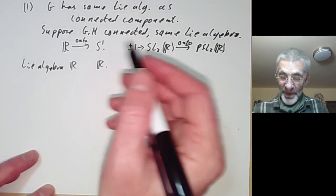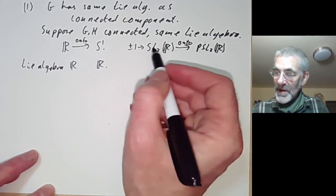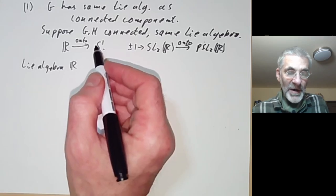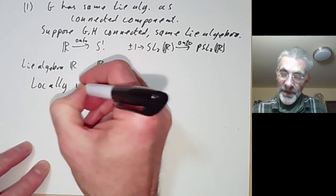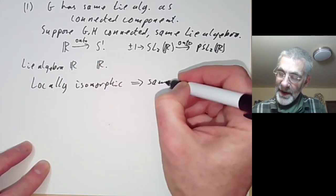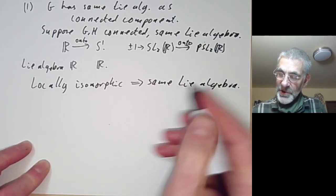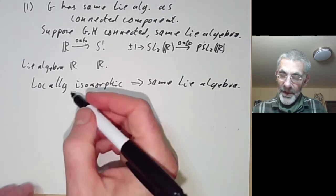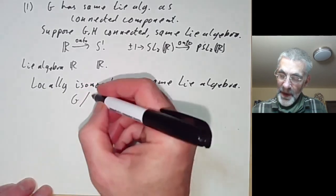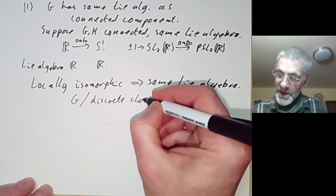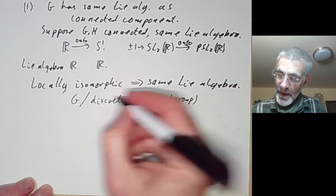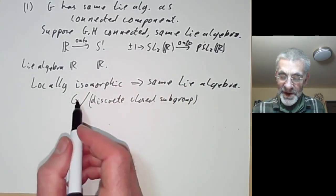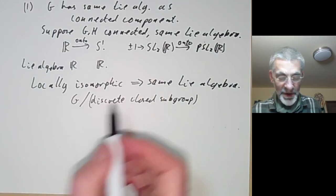What's going on is that these pairs of groups are locally isomorphic, so there's a neighbourhood of the identity of one group that looks like a neighbourhood of the identity of the other. And if two groups are locally isomorphic, they have the same Lie algebra. So locally isomorphic implies the same Lie algebra. In fact the converse is also true — if two groups have the same Lie algebra they are at least locally isomorphic, though this takes more work. You can get lots of examples of locally isomorphic groups by taking G modulo a discrete closed normal subgroup.